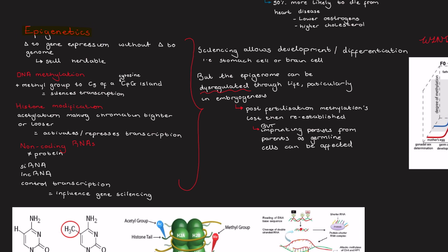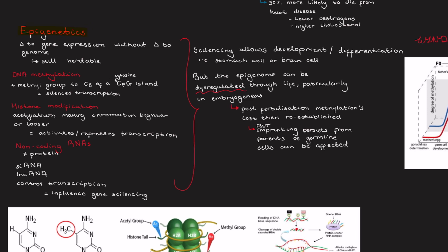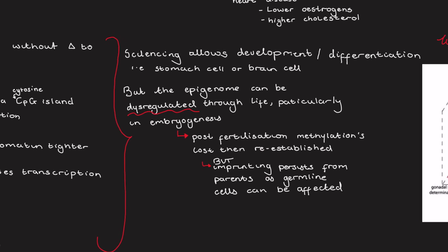These three epigenetic influences are very important in development as the silencing of particular genes or copies of particular genes is a normal process in development. By silencing genes, it allows differentiation, the formation of brain cells and stomach cells and not all cells being the same thing because certain genes are switched off or switched on in different areas, resulting in different cells.